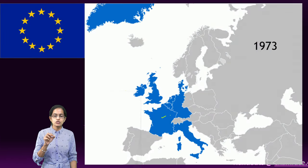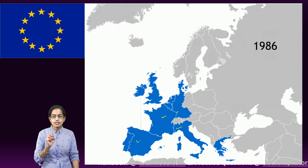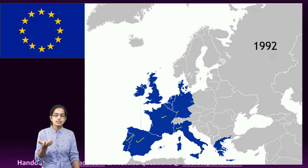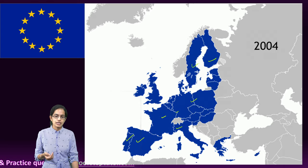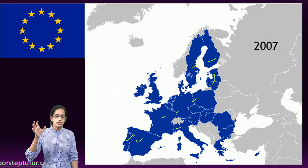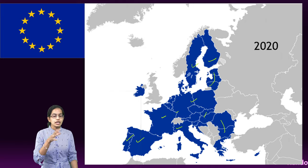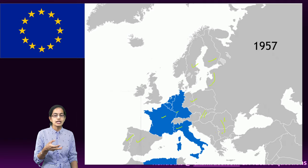Initially, it was just the nations of France, parts of Germany, and Italy that were part of the European Union. But later on, Spain, Portugal, and then East Germany joined. After that came the Pheno-Scandinavian countries, then Estonia, Latvia, Lithuania, Romania, and Bulgaria. The Czech and Austrian regions and the Bulgaria and Romania areas also gradually became part of the European Union.